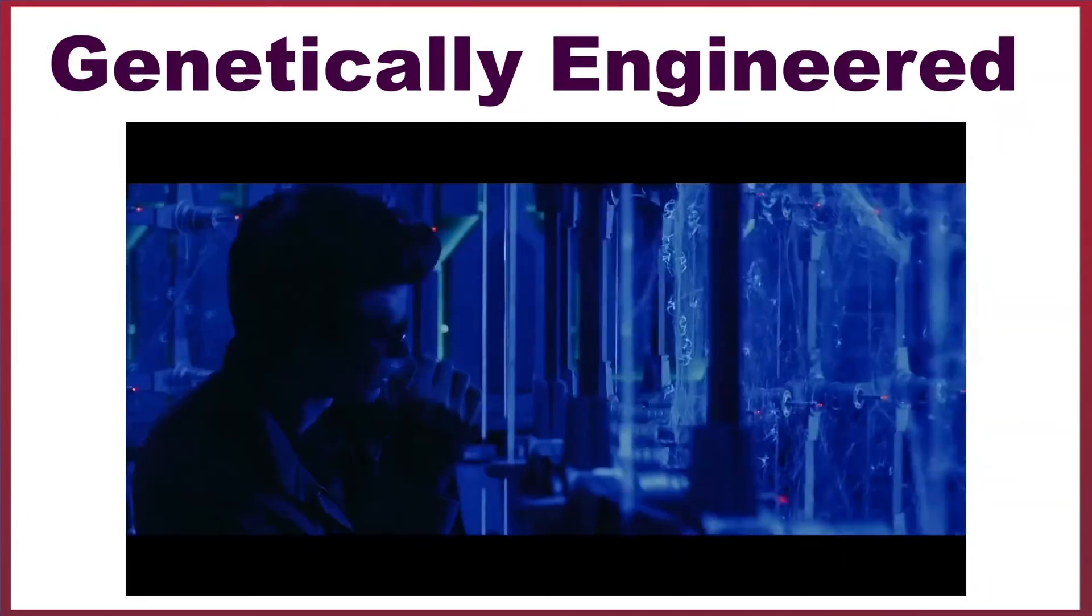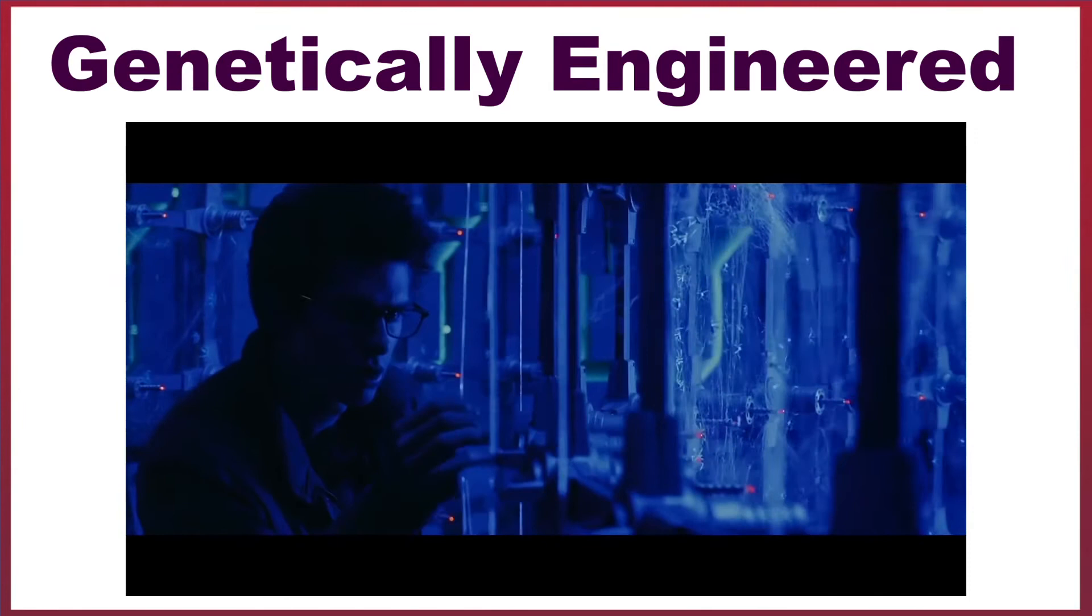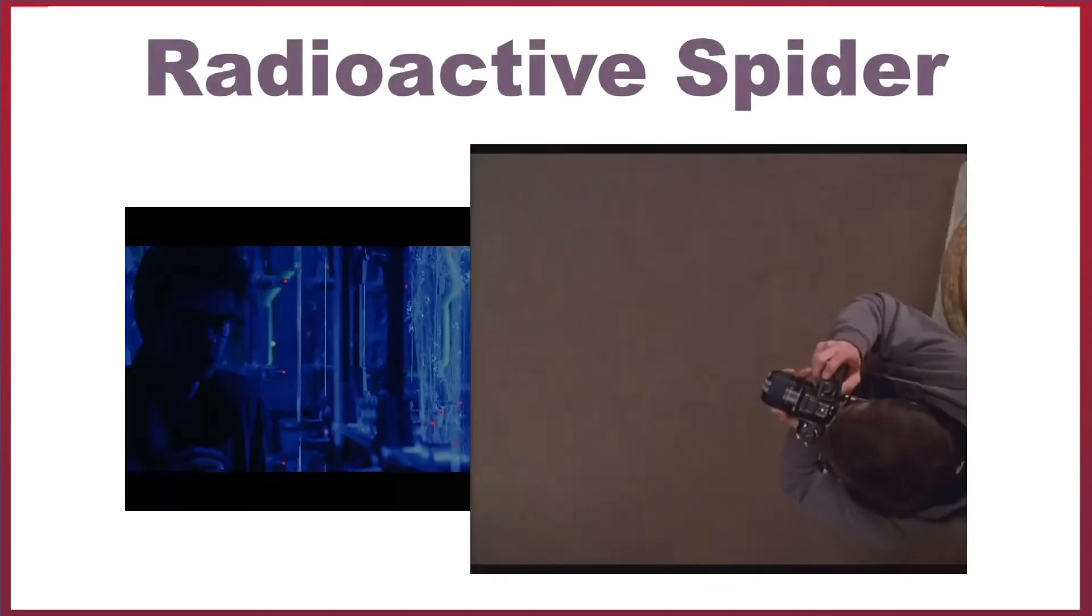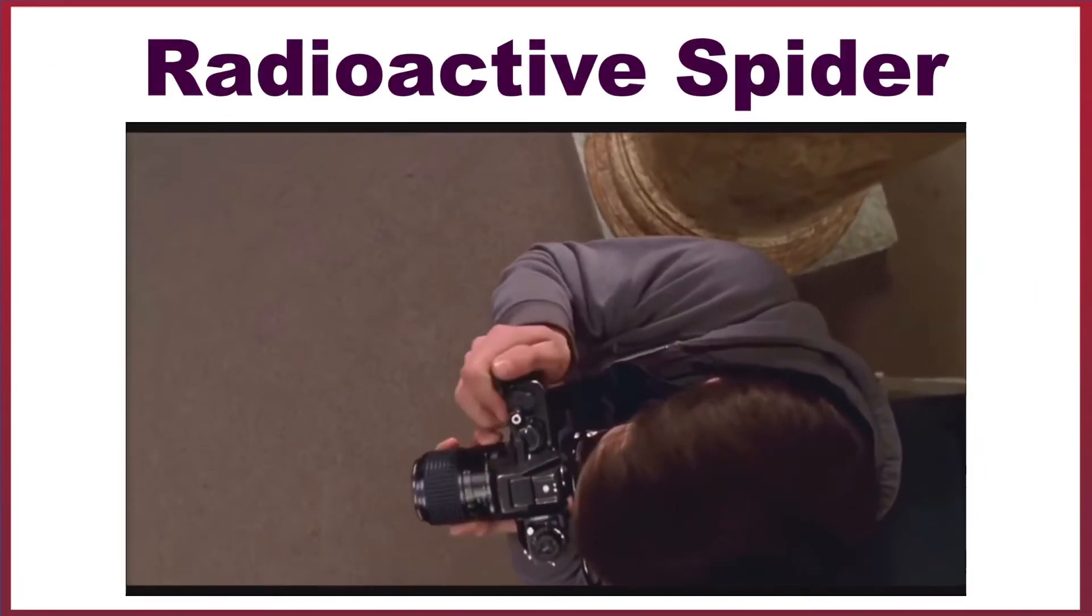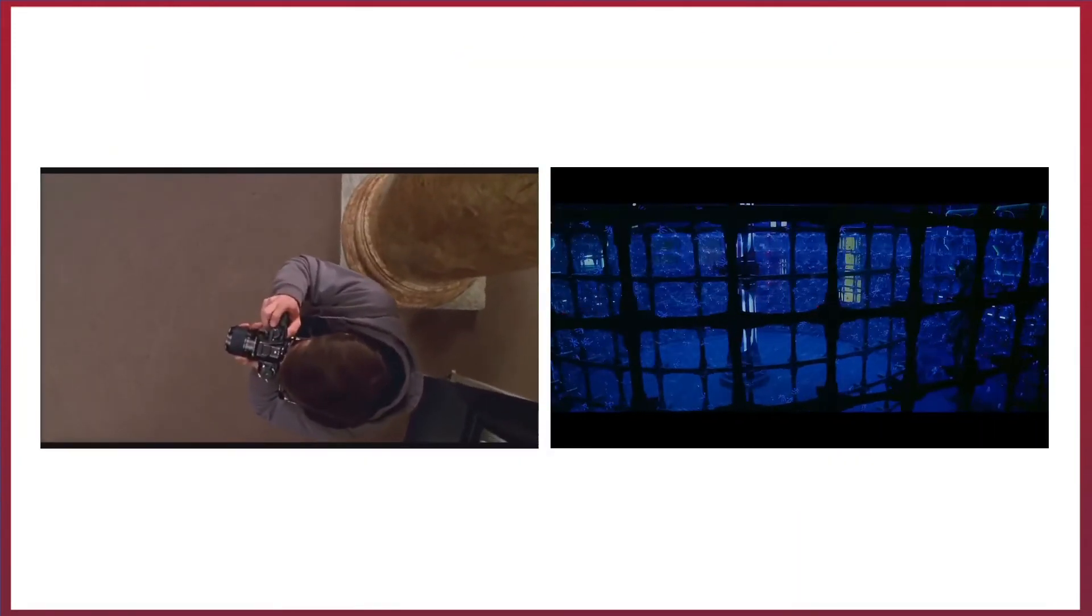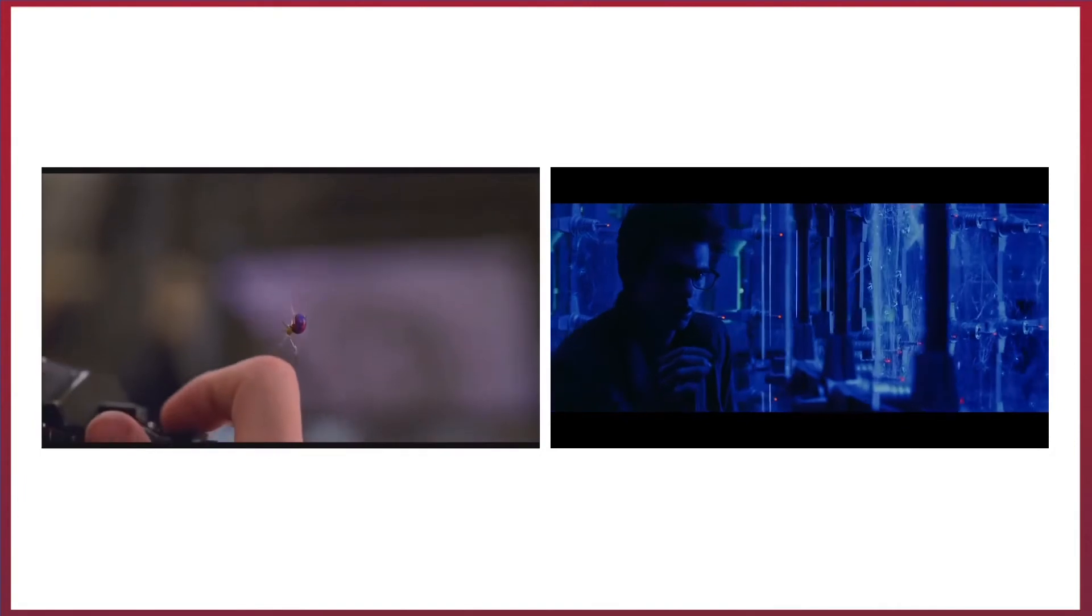There are two distinct types of spider that have been shown biting Peter and giving him spider powers. Genetically engineered spiders as seen in Sony's Amazing Spider-Man movies, and a much more common radioactive spider seen in pretty much all other Spider-Man adaptations. We'll be looking at both of these types just to be thorough, and seeing how they could possibly change Peter's DNA.